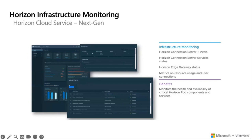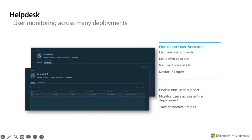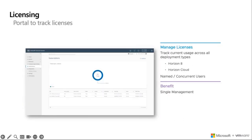Here's a quick example of the monitoring UI — it helps monitor the health and pod components in the environment. You can connect on-prem pods to the Next Gen for centralized management. We will also be able to see help desk and user monitoring across various deployments, with extra details on user sessions — you can look at restart and logoff times, how often that happens, machine details, and a list of active sessions. Many different corrective actions can now be taken because of this extra layer of detail. We also have the licensing portal, where you are able to track current usage across all deployment types — Horizon 8 and Horizon Cloud — offering a single management plane.